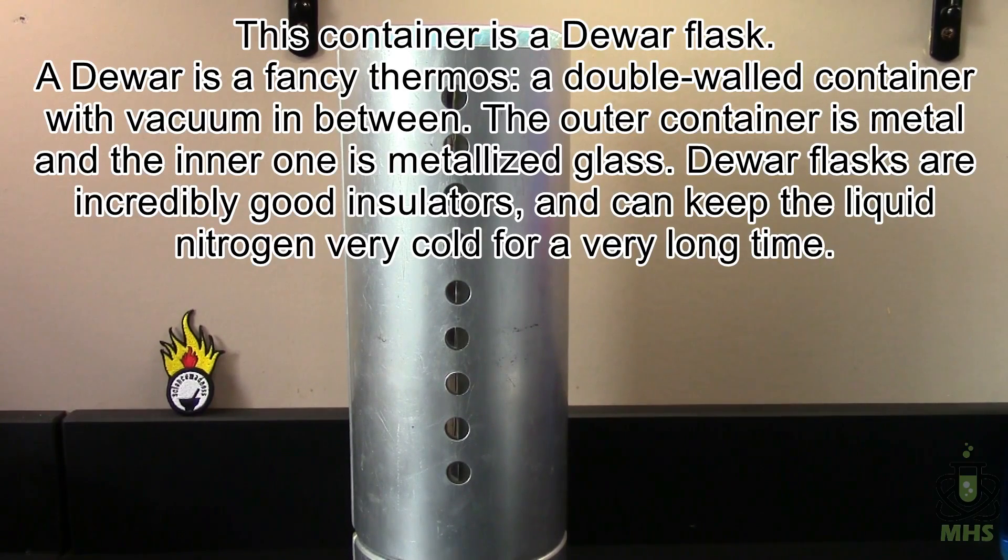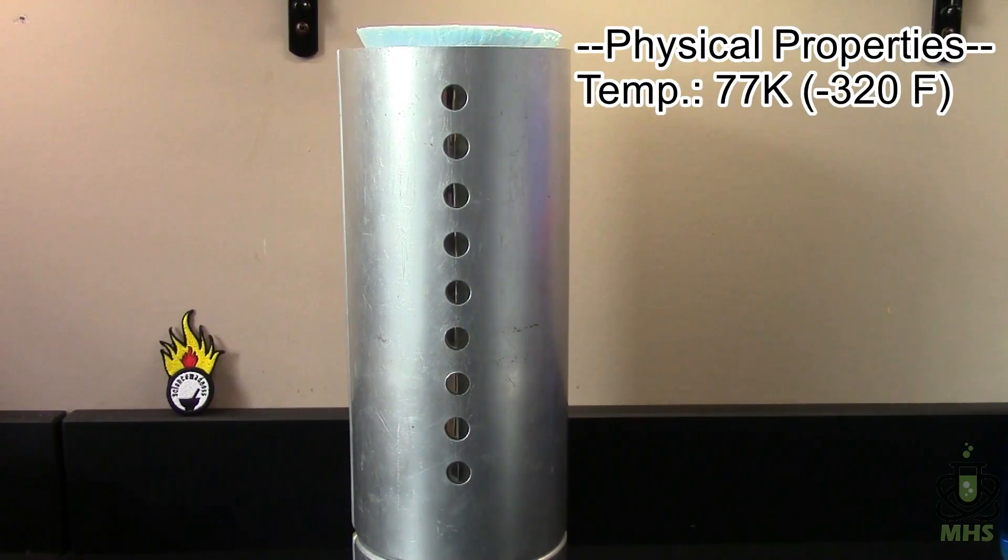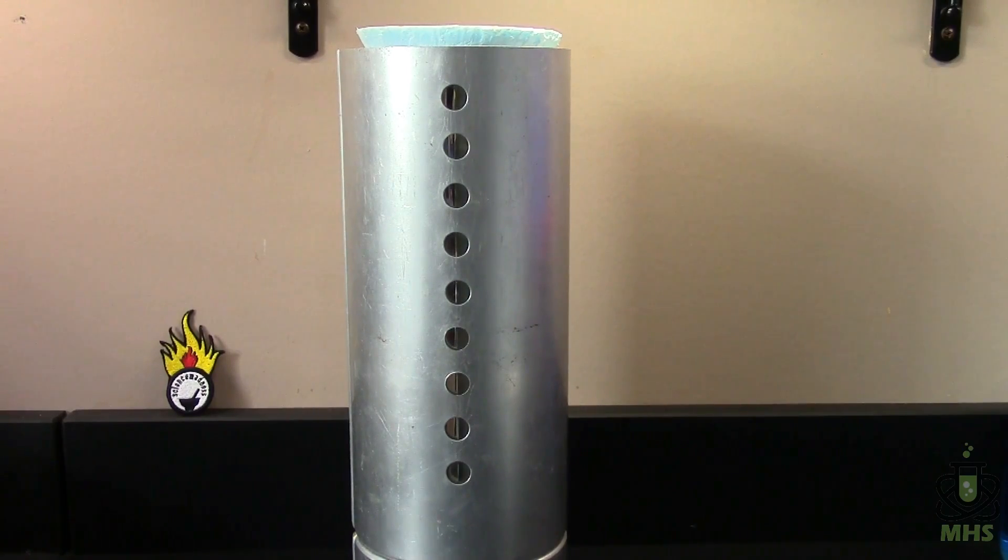So first let's go over physical properties. Liquid nitrogen, as you probably know, is very, very cold. It's at 77 Kelvin, or negative 320 degrees Fahrenheit. So that is astonishingly cold. The Kelvin scale, if you're unfamiliar with it, zero is absolute zero. You cannot get any colder than that temperature.